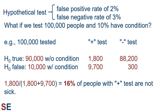Let's see how this works by looking at an example. Let's consider a hypothetical test which has a false positive rate of 2% and a false negative rate of 3%. What if we test 100,000 people in which 10% of them have the condition? That's 90,000 individuals without the condition and 10,000 individuals with the condition. Of the 90,000 individuals without the condition, the false positive rate of 2% means that 1,800 individuals will get a positive test result and the remaining 88,200 will get a negative test result.